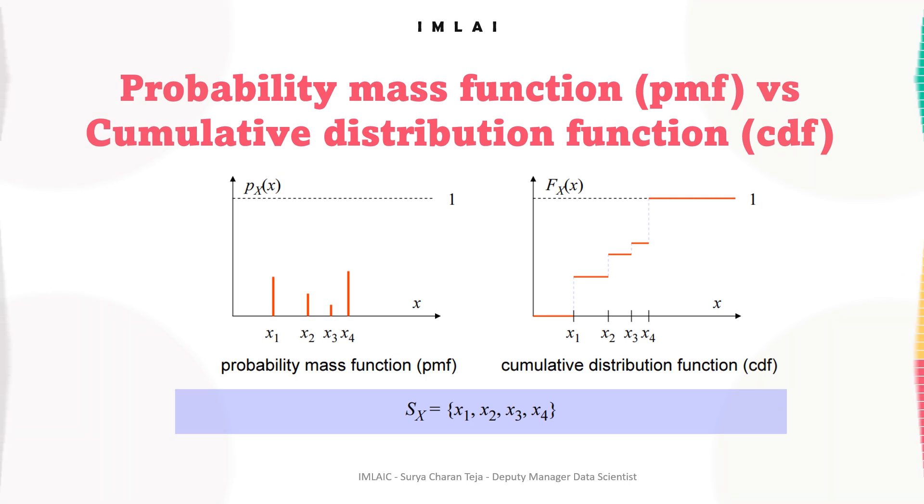The PMF gives the probability of each possible value that the random variable can take on, while the CDF gives the probability that the random variable is less than or equal to a given value. That's what you can see on the screen here.